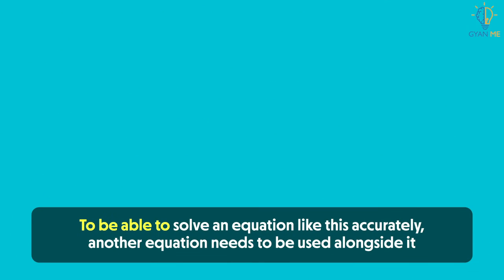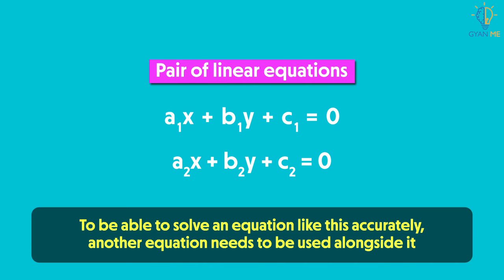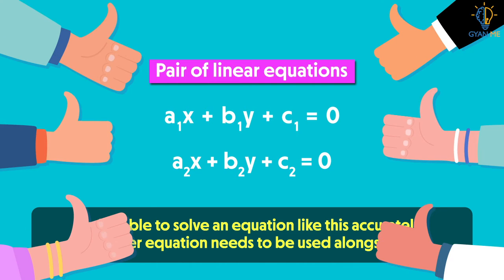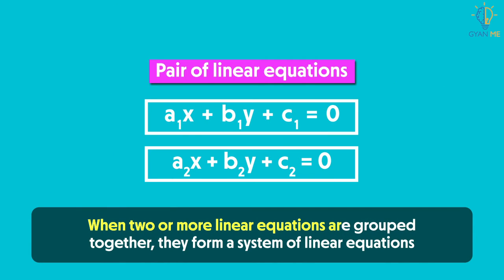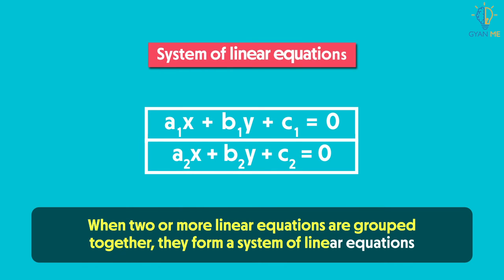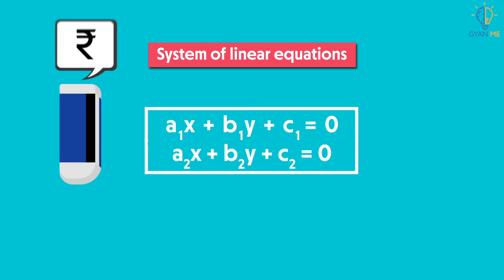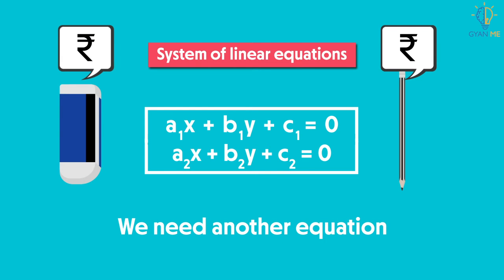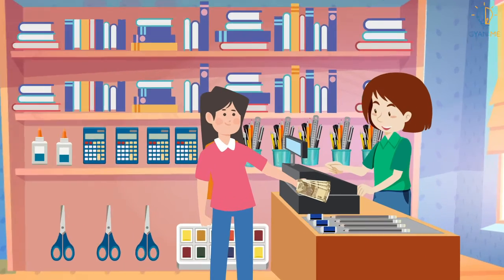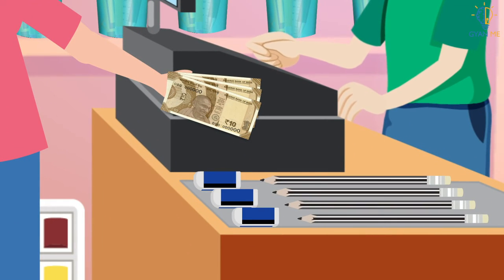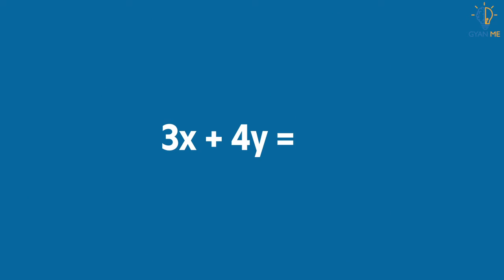Therefore, to solve an equation like this accurately, another equation needs to be used alongside it. Only then is it possible to find the exact answer. When two or more linear equations are grouped together, they form a system of linear equations. To find the exact cost of eraser and pencil, we need another condition. Let us say Anita bought 3 erasers and 4 pencils at a total cost of Rs. 30, giving the equation 3X plus 4Y equals 30.